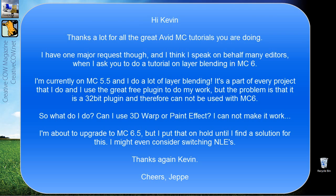I'm currently on Media Composer 5.5 and I do a lot of layer blending. It's part of every project that I do and I'm currently using a great free plugin. The problem is it is a 32-bit plugin and therefore cannot be used inside of Media Composer 6 because Media Composer 6 is 64-bit. So what do I do? Can I use 3D Warp or the paint effect? I cannot make this work. I'm about to upgrade but I'm going to put that on hold until I can find a solution, and I might even consider switching NLEs.